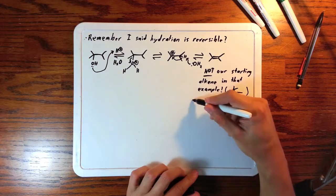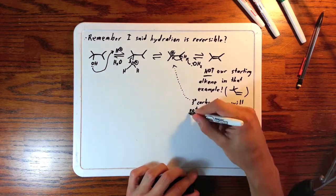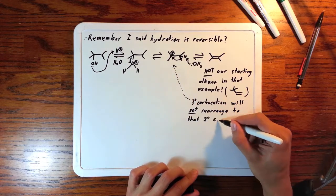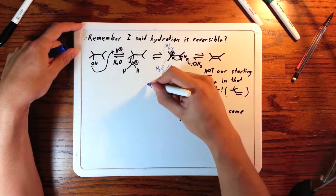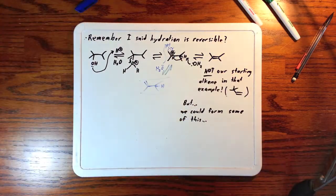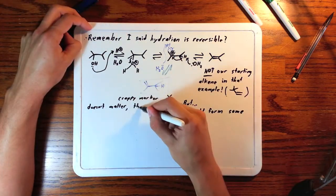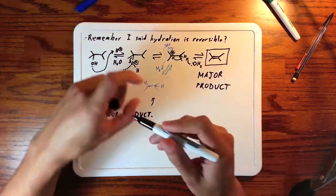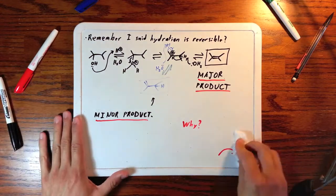The reason we get something different is because this tertiary carbocation will not rearrange to give us the secondary carbocation it came from. But water could pull off a hydrogen from one of these equivalent methyl groups and give us this different dehydration product. It's a minor product; this other one is our major product.